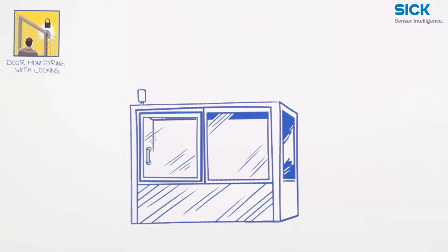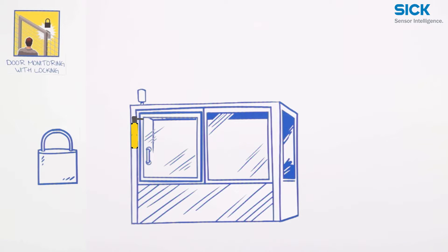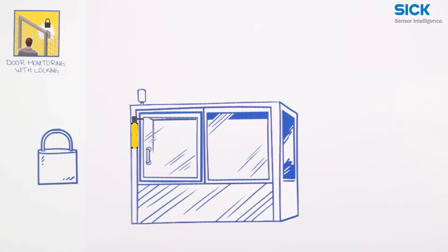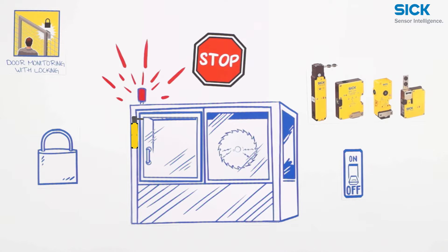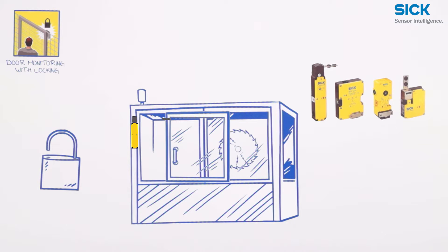Now let's go to the next safety task. It's not always enough to only monitor the door. For some applications, it is also necessary to prevent access to the machine — for example, to protect a fragile manufacturing process from interruptions, or to protect people from overrun movements of the machines that cannot be stopped immediately. For these tasks, safety locking devices are the right choice. They allow the door to be opened only when there is no danger to people or processes.